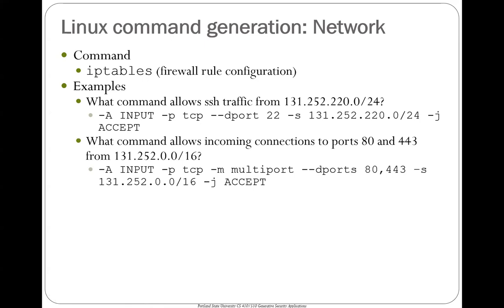What command allows incoming connections to ports 80 and 443 — the two web ports — from Portland State addresses 131.252.0.0? It's similar, except it uses the multiport flag. Rather than two separate commands, it says it's going to use multiport and allow both 80 and 443 from the source prefix, then accept.